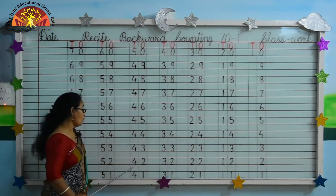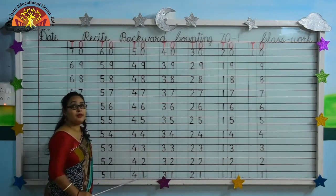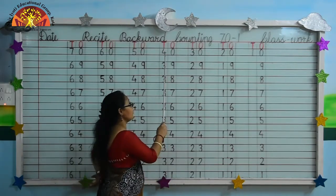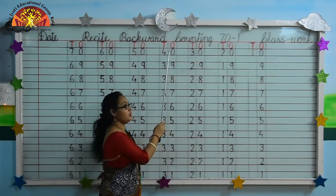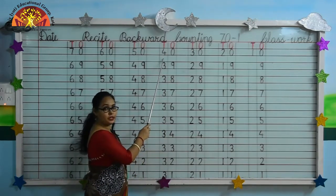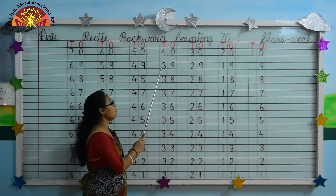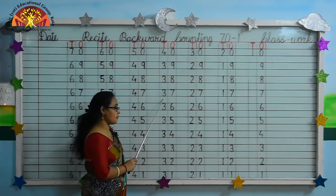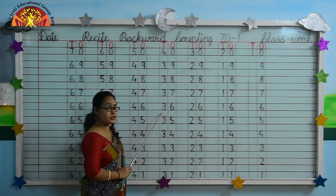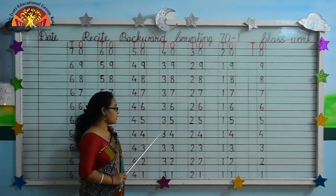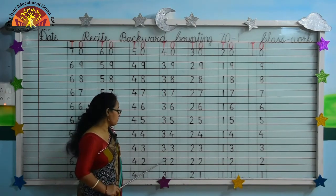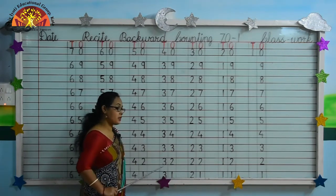Kids, now you tell me what comes before 41. Yes, 40, 39, 38, 37, 36, 35, 34, 33, 32, 31.